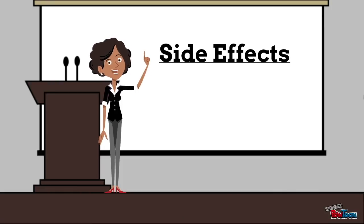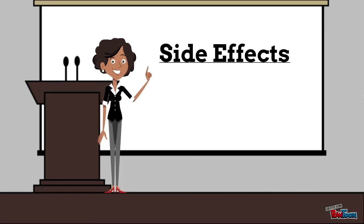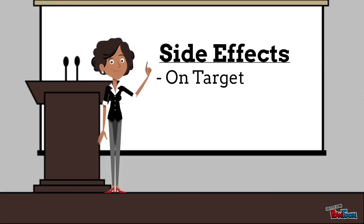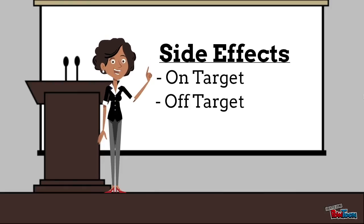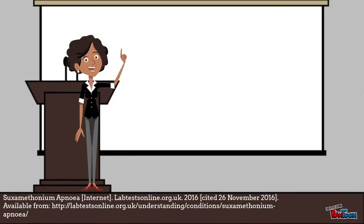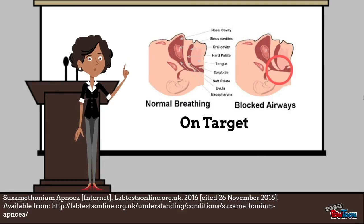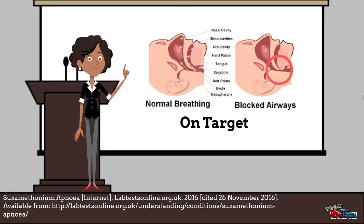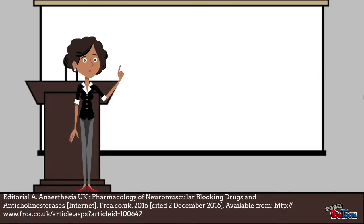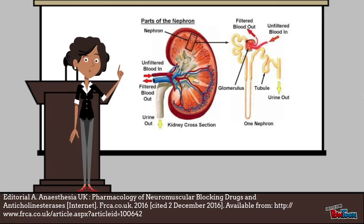Like most drugs, succinylcholine has many side effects. Some are on-target effects which affect the acetylcholine nicotinic receptors, while others are off-target. Succinylcholine apnea is rare; it is an on-target side effect that occurs when the patient is incapable of metabolizing the drug quickly enough. They remain paralyzed and unable to breathe after surgery because they cannot regain muscle function quickly enough. The majority of succinylcholine is metabolized by plasma cholinesterase, and about 10% is excreted by the kidneys.